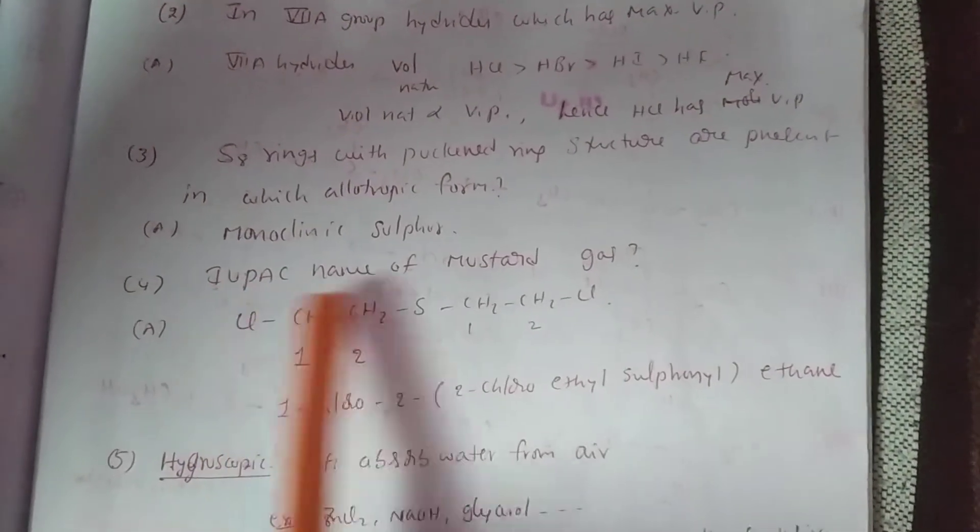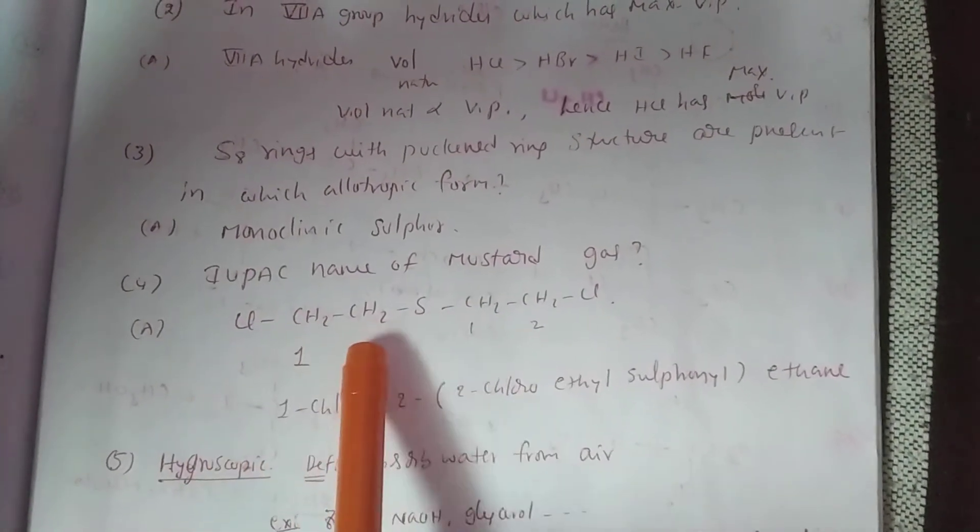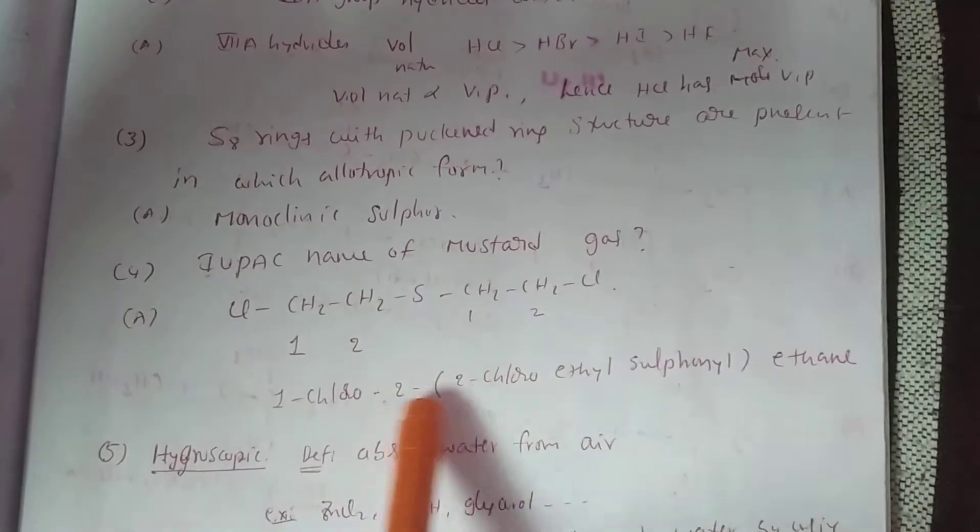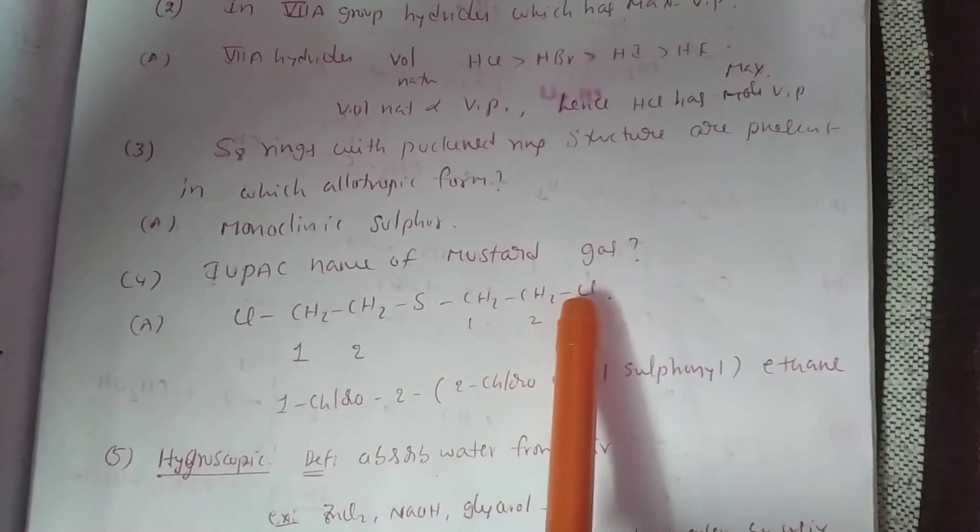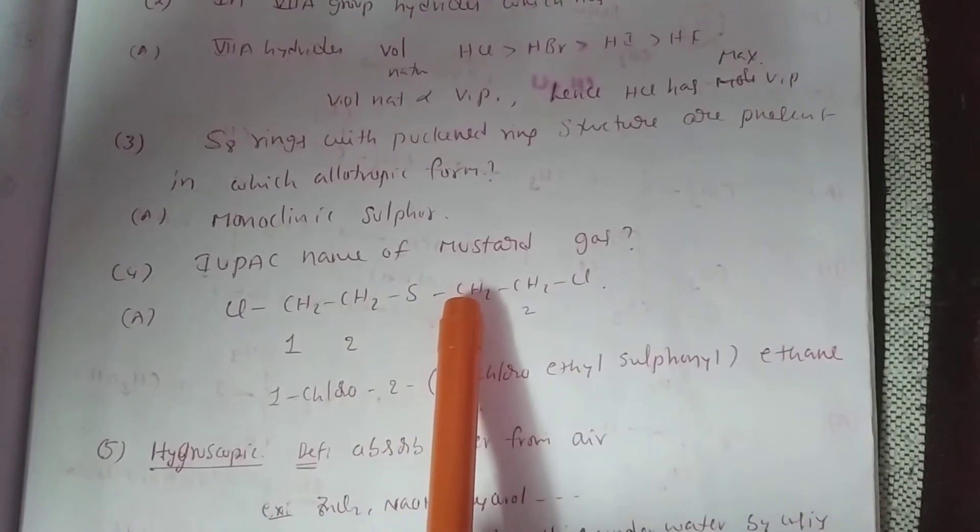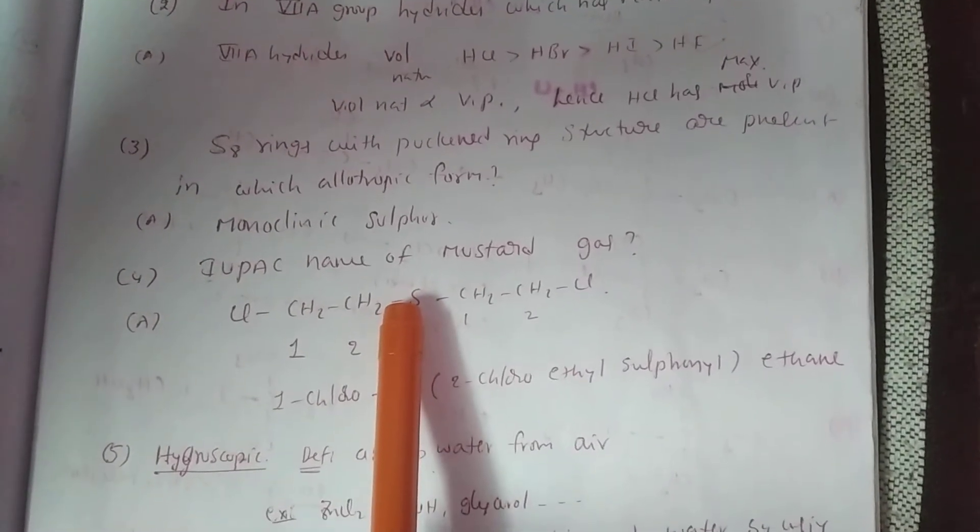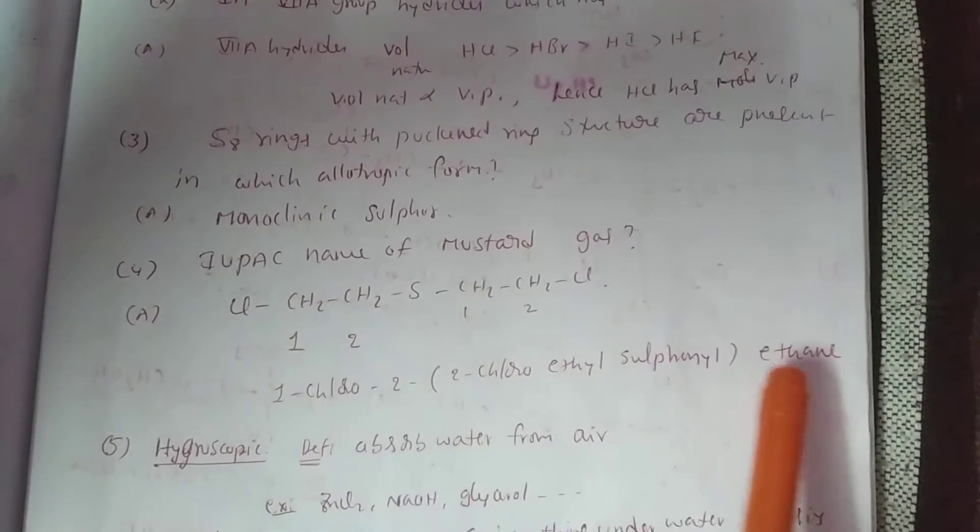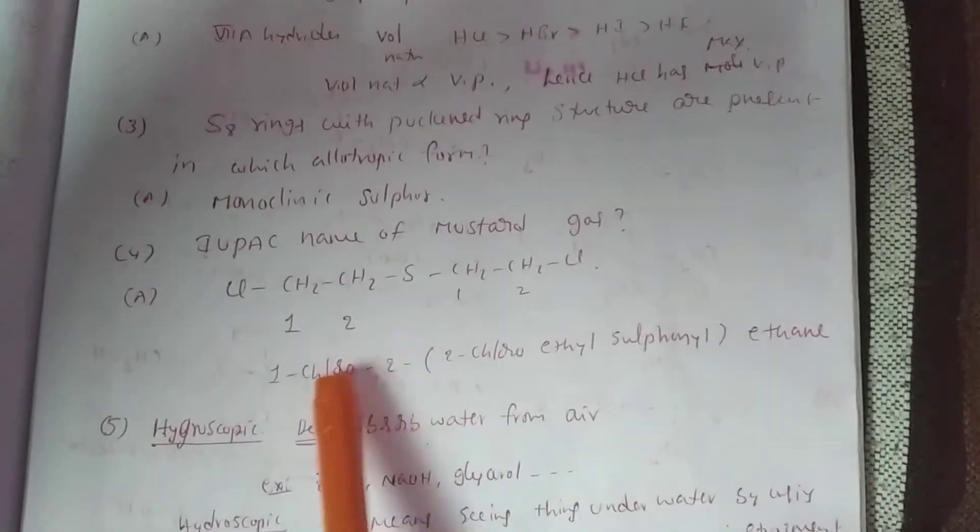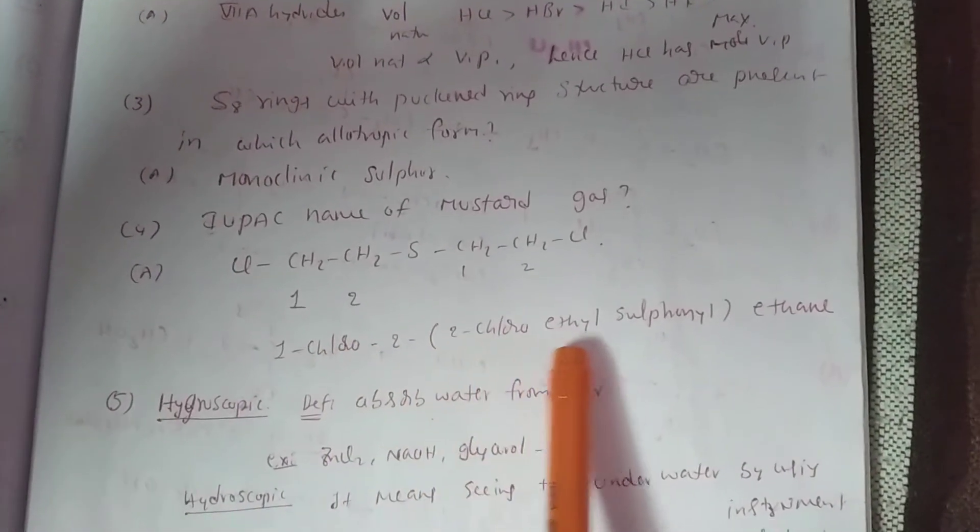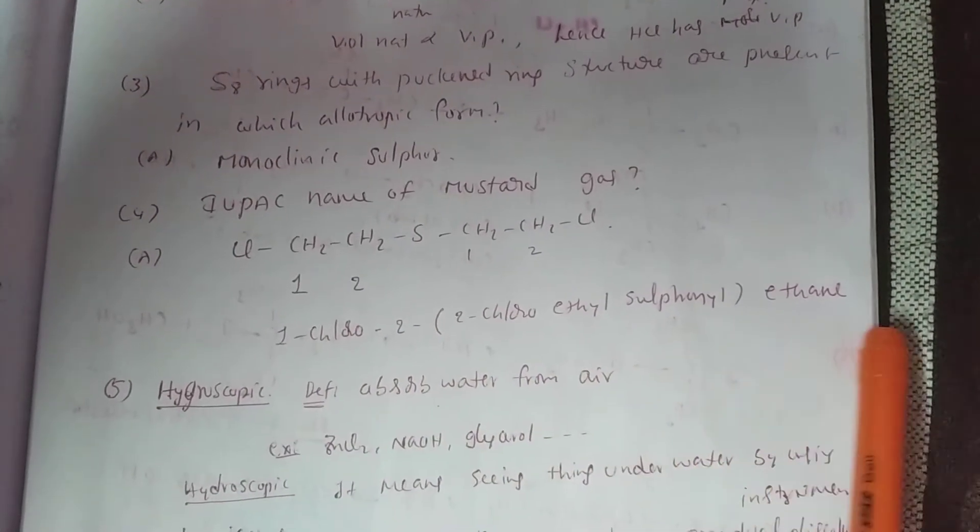These are the substituents: 1-chloro, second place this is substituent, 2-chloro ethyl sulfonyl. Two carbons means ethane. So IUPAC name is 1-chloro-2-(2-chloroethyl sulfonyl) ethane.